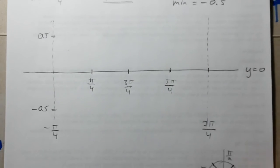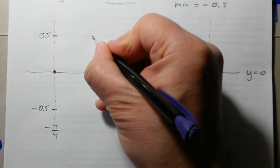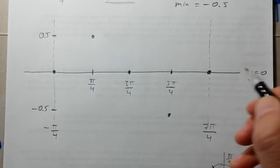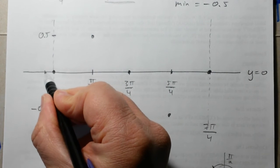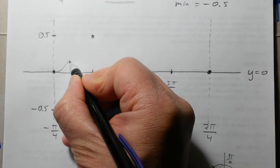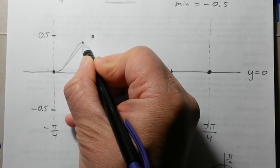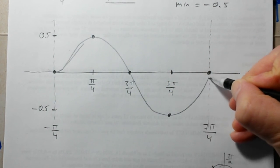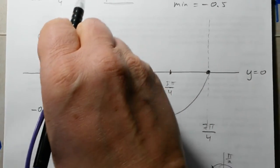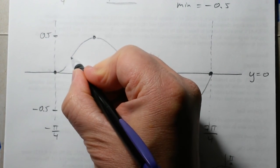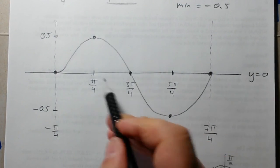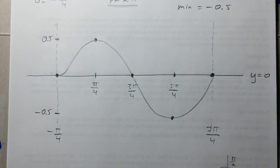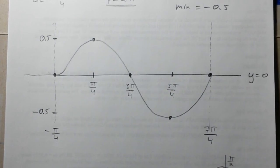Now we've got everything. It's the sine function: it starts at the equation of axes, goes all the way to the top, comes back to the equation of axes, hits the minimum, and goes back to the axis. Join these with a smooth curve — and that's our sketch for this equation. Let's take a look at a few more examples.